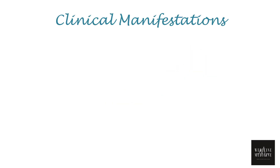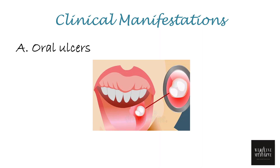Behcet's disease can affect blood vessels anywhere in the body, giving rise to a wide range of symptoms, out of which oral ulcers are the universal one. Oral ulcers seen could be aphthous ulcers or herpetiform lesions, which are painful and take a longer time to heal — at least about 10 to 30 days.